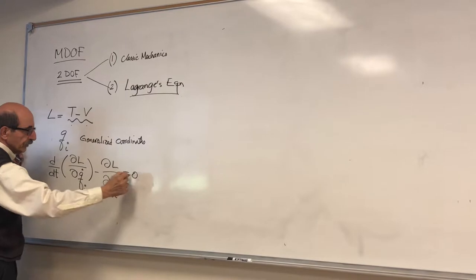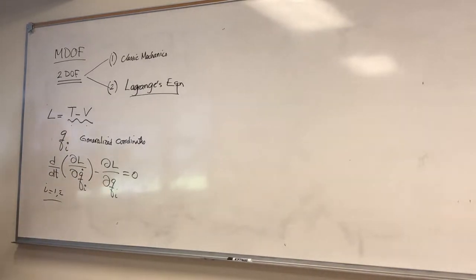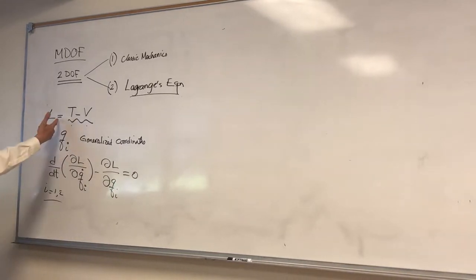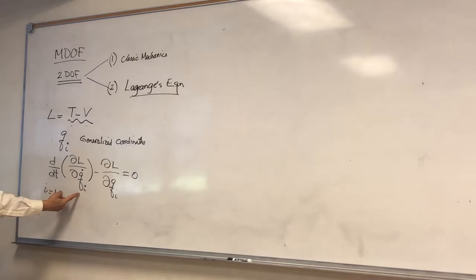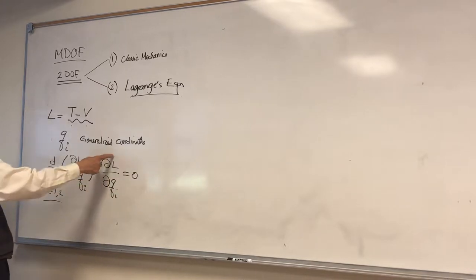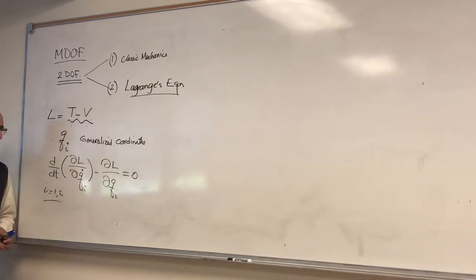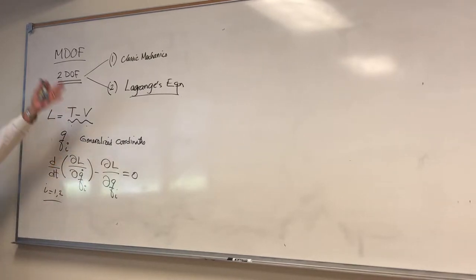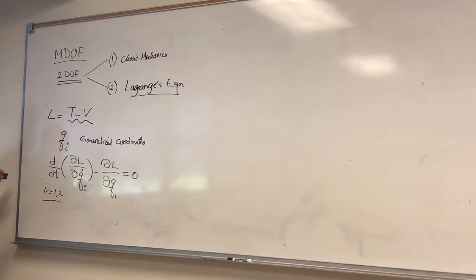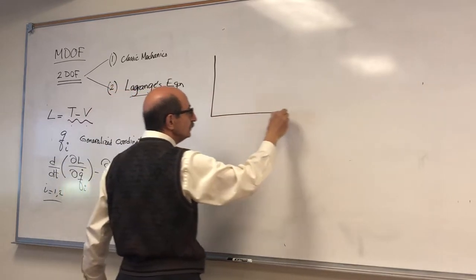For a two-degree of freedom system, i would be one and two. For i equal to one — the first degree of freedom — you take the partial derivative of the Lagrangian with respect to the velocity of that degree of freedom, take the time derivative of that, subtract from it the partial derivative of the Lagrangian with respect to the displacement of that degree of freedom, and you can derive the equation of motion. We cannot prove that here, but we can at least demonstrate its application and how practical and powerful it is compared with Newton's approach.